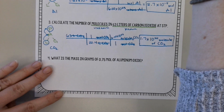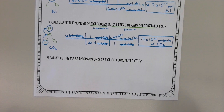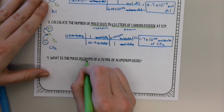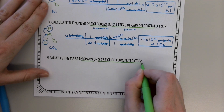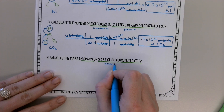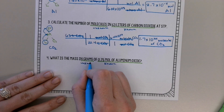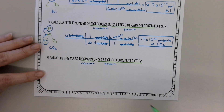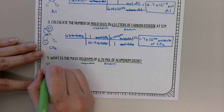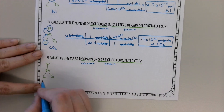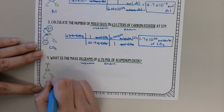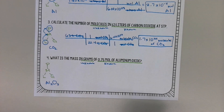One last problem, and then you'll try some on your own. What is the mass in grams of 0.75 mol of aluminum oxide? Our known is moles and our unknown is grams. Using our map — this whole thing is about aluminum oxide — we want to go from mole to grams, which is just one step across the bridge.